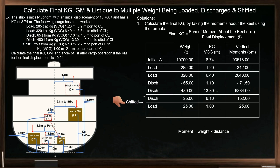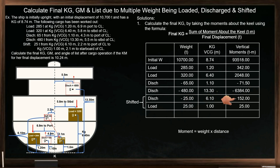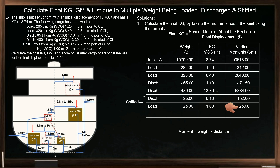For the shifted weight, we have two entries. Since we remove the weight from its initial position, it is considered a discharged weight with a negative sign. Multiply its weight by its KG to determine the vertical moment — it is negative since it is a discharged weight. Once the weight is transferred to its final position, it is considered a loaded weight with a positive sign. Multiply the weight by its KG; the sign is positive since it is considered a loaded weight.